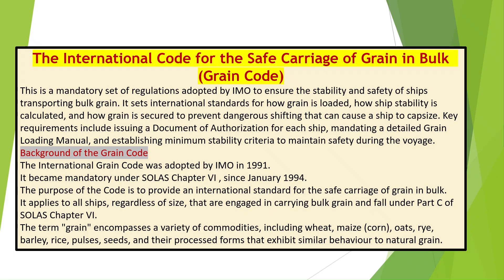The International Grain Code was adopted by IMO in 1991 and became mandatory under SOLAS Chapter 6 since January 1994. The purpose of the Code is to provide an international standard for the safe carriage of grain in bulk. It applies to all ships, regardless of size, that are engaged in carrying bulk grain and fall under Part C of SOLAS Chapter 6.